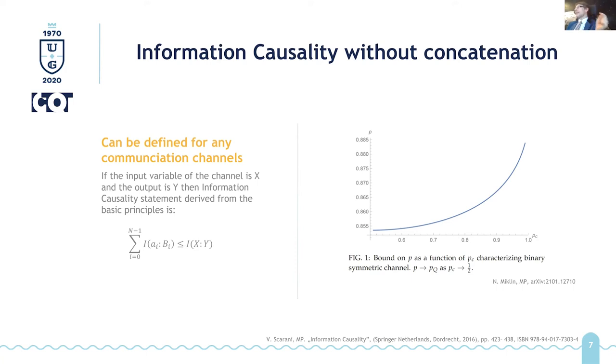the number of bits being sent only in the case of the channel being identity channel. So now we ask, okay, what would be the bound flowing from information causality if we just have a single copy of the box, but Alice and Bob are communicating via symmetric noisy channel. And we have a plot here from our archive paper.